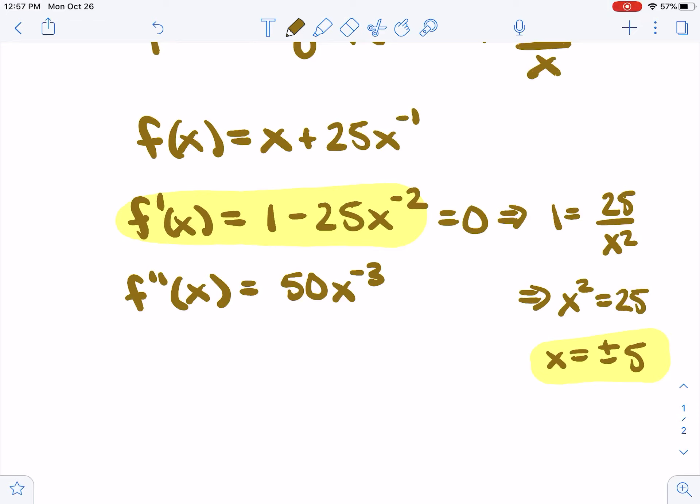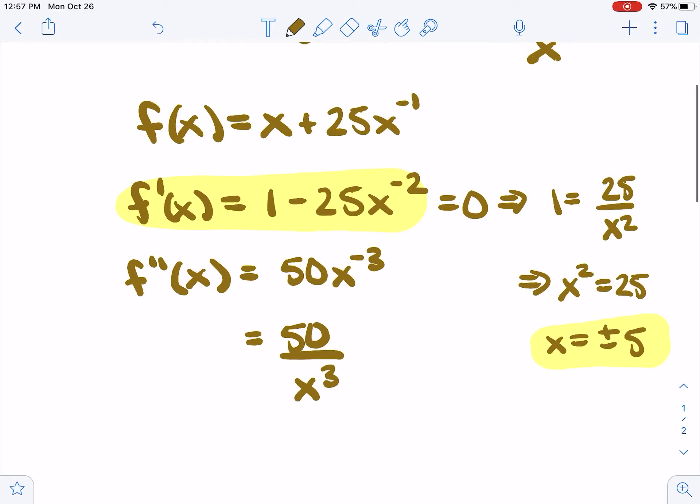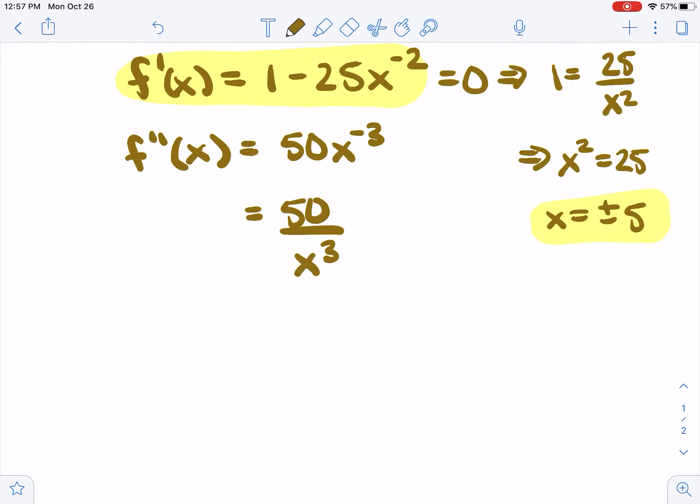But now that we have them, let's use the second derivative test. Second derivative is 50 over x cubed. So for the second derivative test, we don't look at intervals anymore. We don't look at points in between the critical points. We look at the second derivative at the critical points.